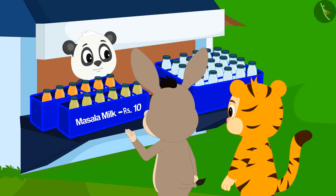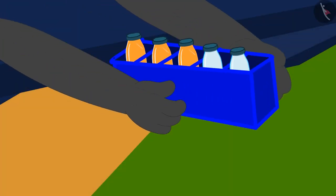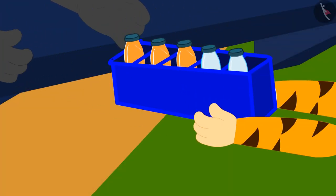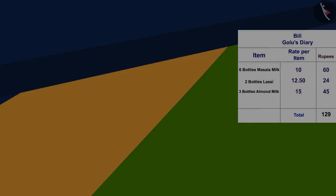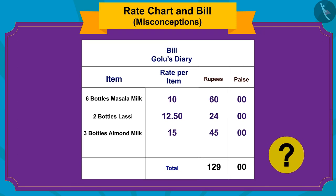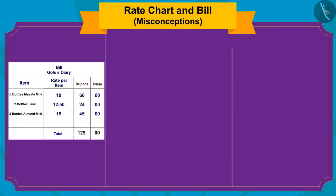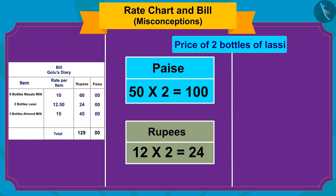Now Bholla and Shere Khan want to carry two bottles of lassi and three bottles of almond milk for their friends. Golu gave them all the bottles and also made a bill for the same. Children, can you look at this bill and tell if Golu has made it correctly? You can pause the video and find the answer. Well done, children — you have found the answer quite rightly!